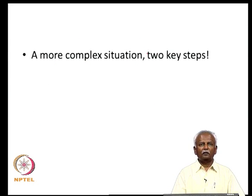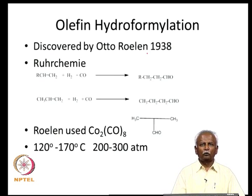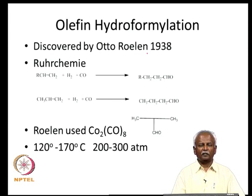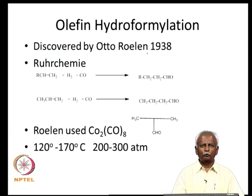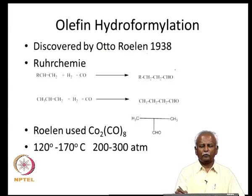We will now consider a more complex situation with two key steps — the hydroformylation reaction. The previous reaction was primarily developed by Monsanto. We are now talking about another chemical company called Ruhrchemie, which developed the hydroformylation reaction. The person primarily responsible for this discovery was Otto Roelen, who did this as early as 1938 — long before the renaissance in organometallic chemistry and the discovery of ferrocene in 1956.